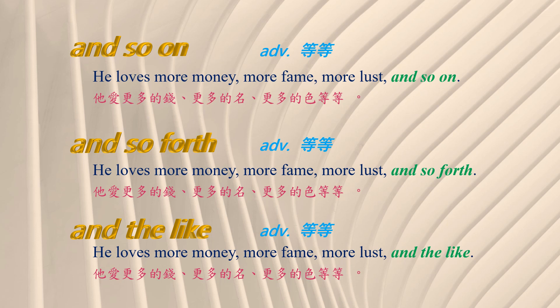One: 'and so on.' Example: 'He loves more money, more fame, more lust, and so on.' 他爱更多的钱，更多的名，更多的色，等等。您可以发现到and so on放在最后面。